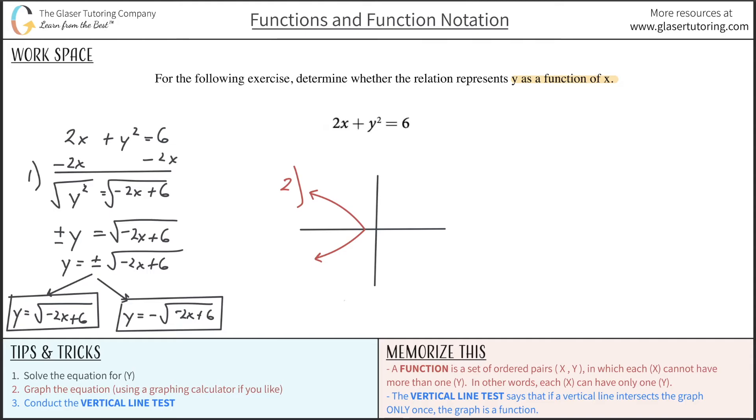So that's what the graph looks like. So then the third thing, after you graph it, is to now pass it through the vertical line test. So let's do that.